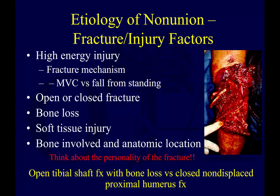Regarding initial fracture and injury factors: high-energy injuries are more likely to result in a slower-to-heal fracture. An open fracture takes longer than a closed fracture. Bone loss with a gap is a problem, as is soft tissue injury and devascularization. You also have to consider the bone involved and anatomic location — an open tibia shaft fracture with bone loss has a much harder time healing than a closed, non-displaced proximal humerus fracture.